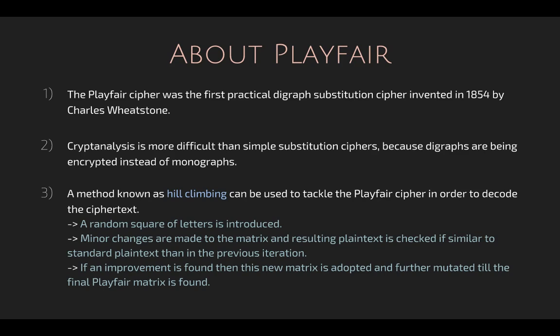There is a method known as hill climbing that can be used to tackle the Playfair cipher in order to decode the ciphertext. A random square of letters is introduced and minor changes are made to this matrix and the resulting plaintext is checked if it is similar to the standard plaintext than in the previous iteration. If there is an improvement, this new matrix is adopted and it is further mutated until a final Playfair matrix is found.